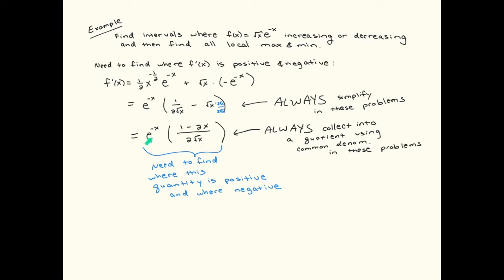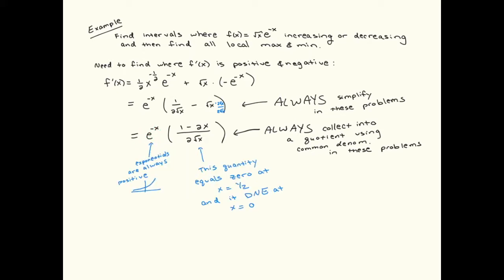Remember, as we talked about in the previous video, exponentials are always positive. So even though it looks a little messy with an e to the minus x out here, we don't have to worry about that because e to the minus x is always positive. The function is equal to zero if the numerator is equal to zero, which happens at x equals one-half. The denominator is equal to zero at x equals zero. So we have two critical points: x equals zero and x equals one-half.